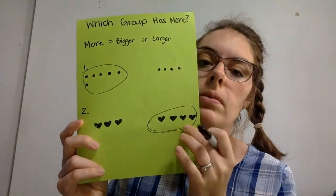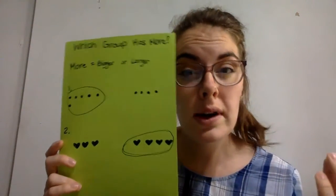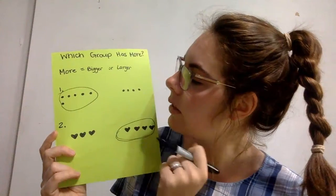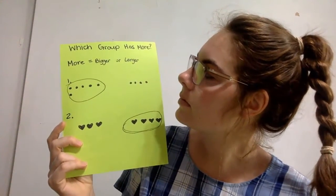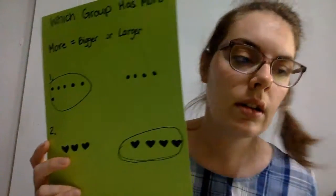Four, because it's a bigger number. We like the bigger number because we'd want more candies, more cookies, more toys, right? So four is more than three, six is more than four. That's one part, which one has more.